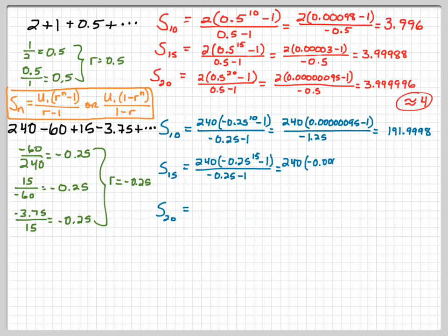Multiply that out. Now we've got nine zeros in here, minus 1 over negative 1.25. And when we calculate that, you can double check me here, but when we calculate that, we get negative 192.00002.